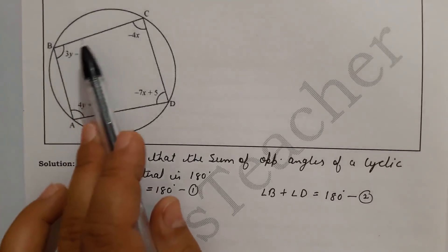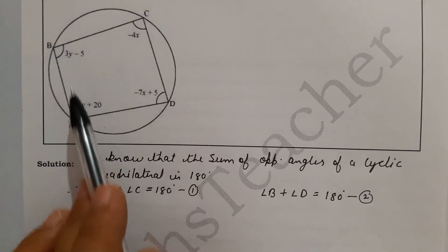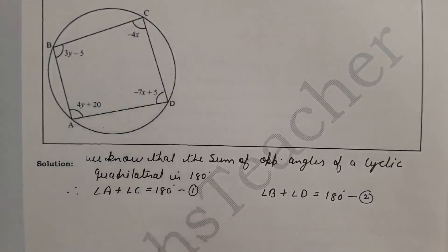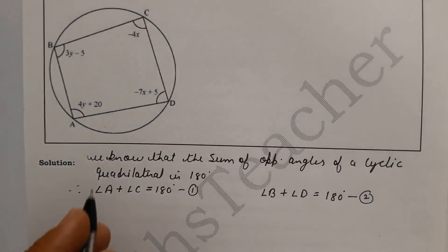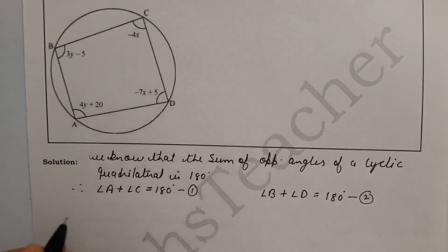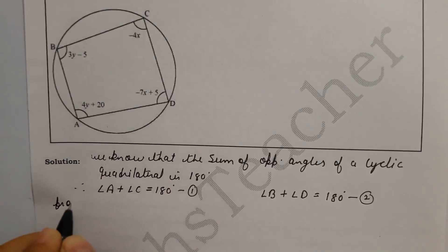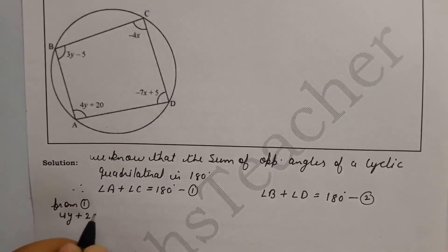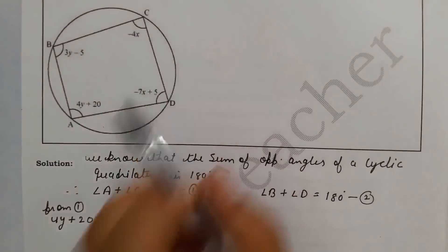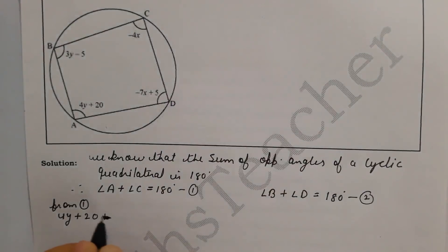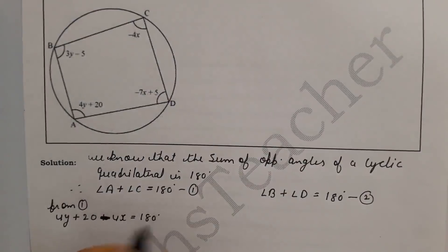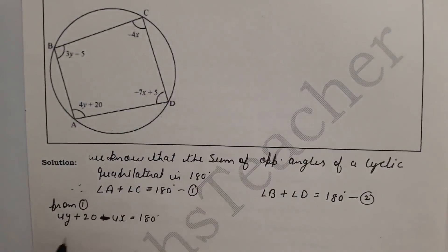The angles are given in terms of two variables, x and y. So we will solve two equations for two variables. We substitute the value of angle A and angle C into equation 1. Putting in the values: angle A plus angle C gives us a term with minus x, equal to 180°.